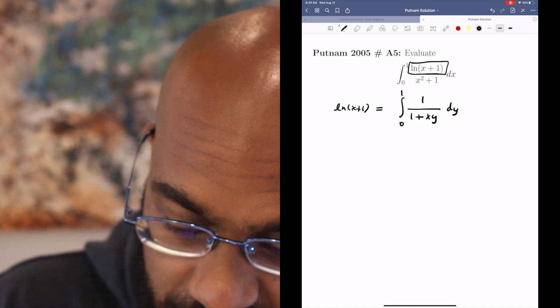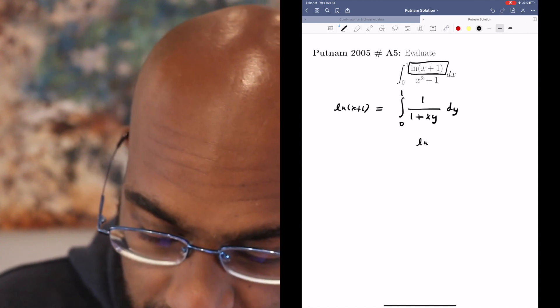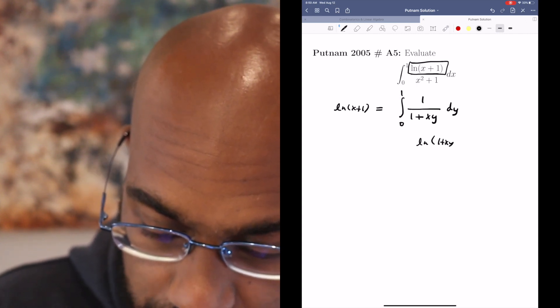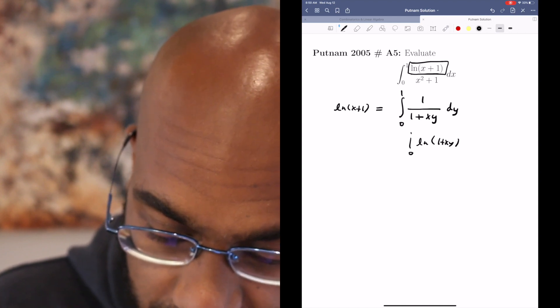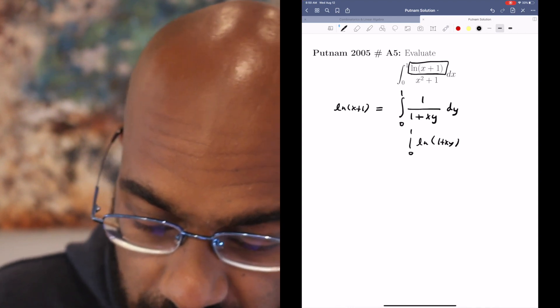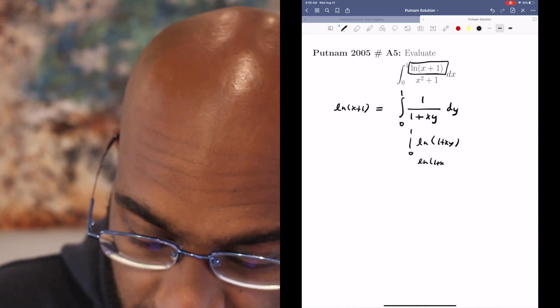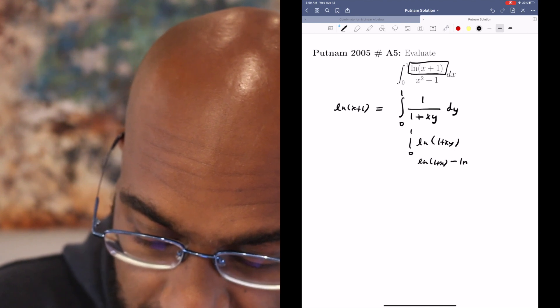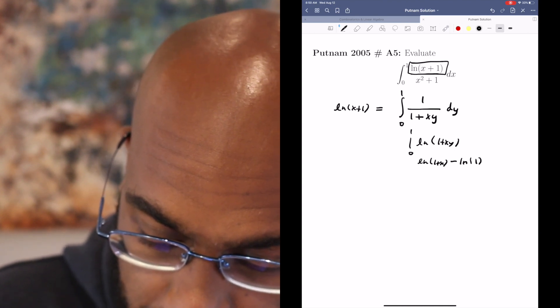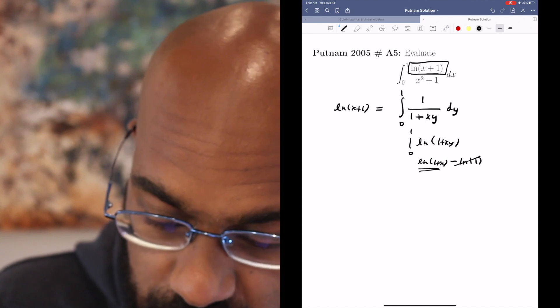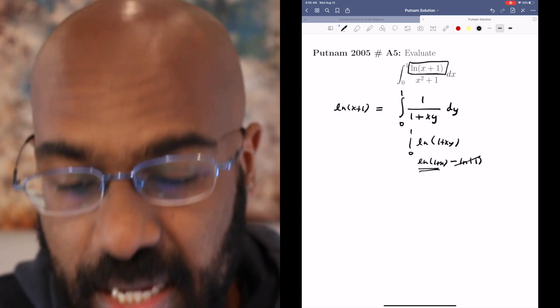You can think about this as evaluating something like 1 over 1 plus xy from 0 to 1. If we did that with respect to the variable y, we would get ln of 1 plus xy evaluated from 0 to 1, which itself is ln of 1 plus x minus ln of 1. So we get the type of thing that we're looking for on the left-hand side.